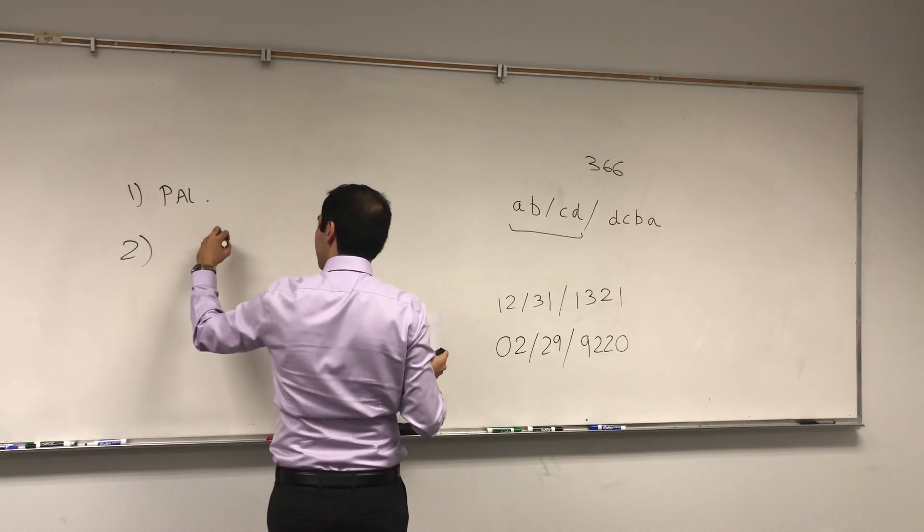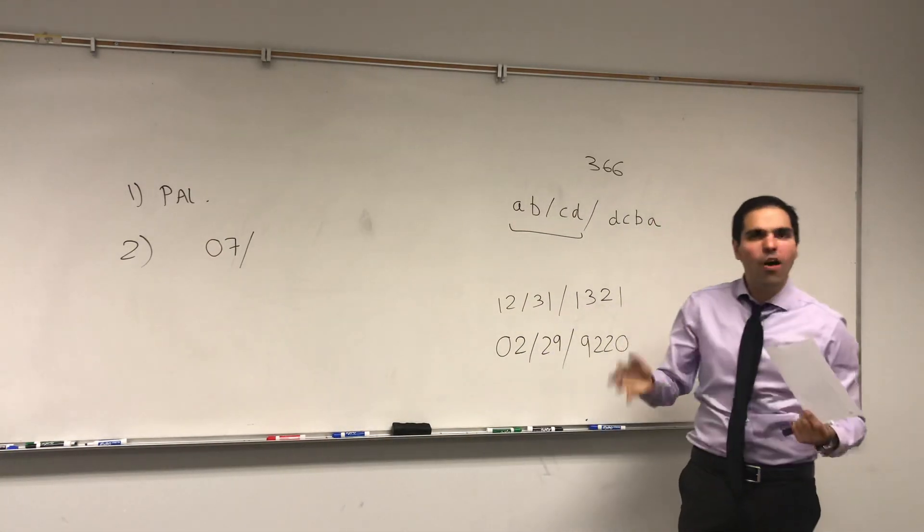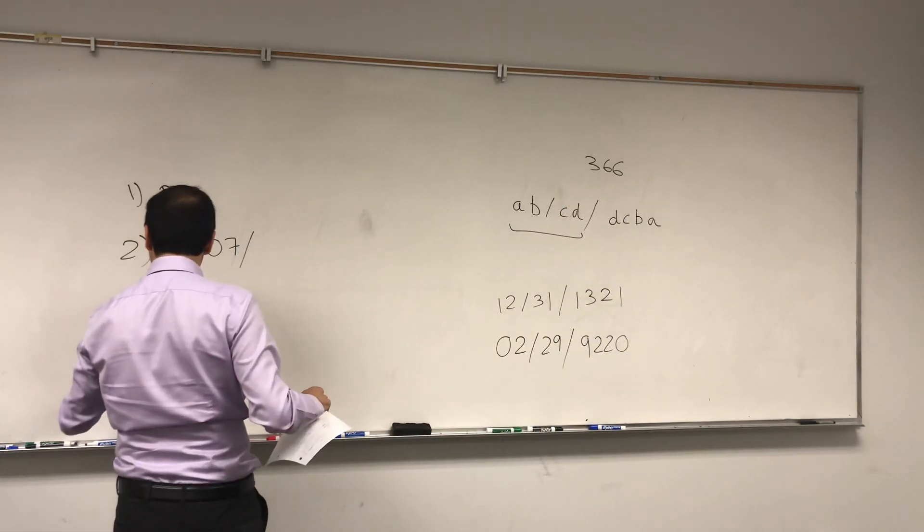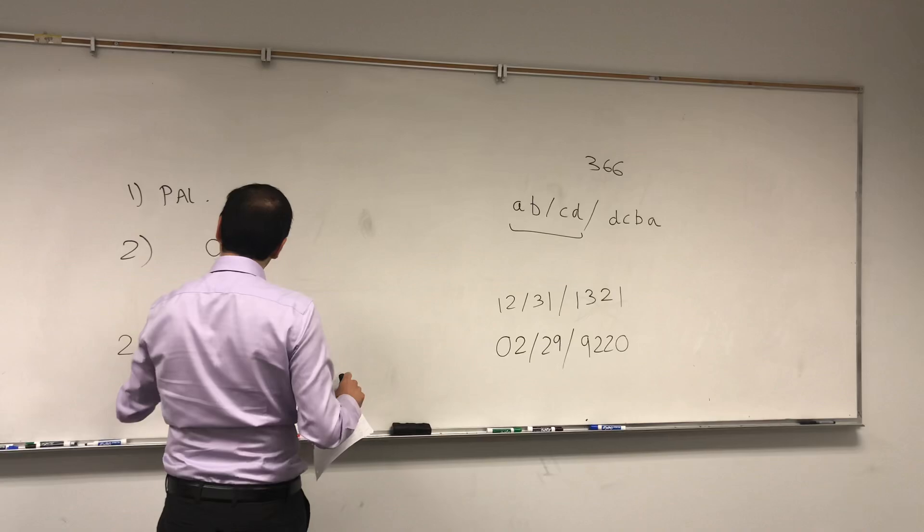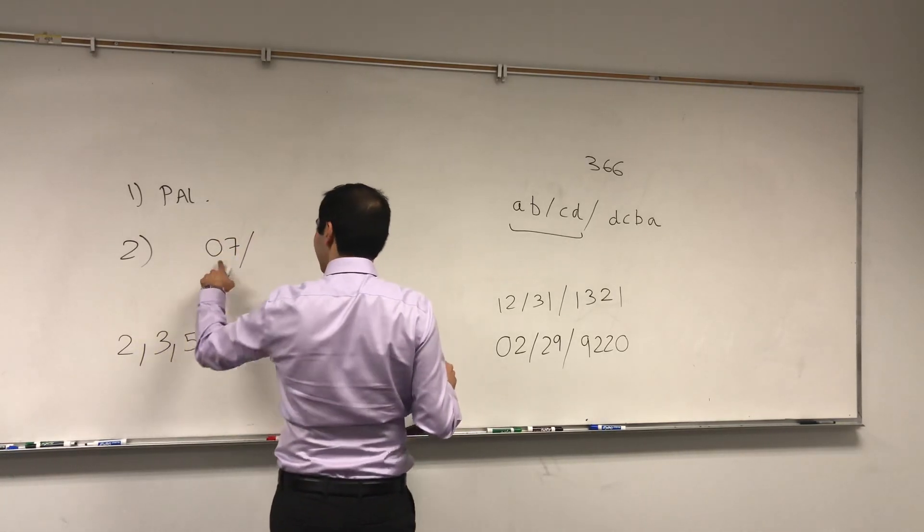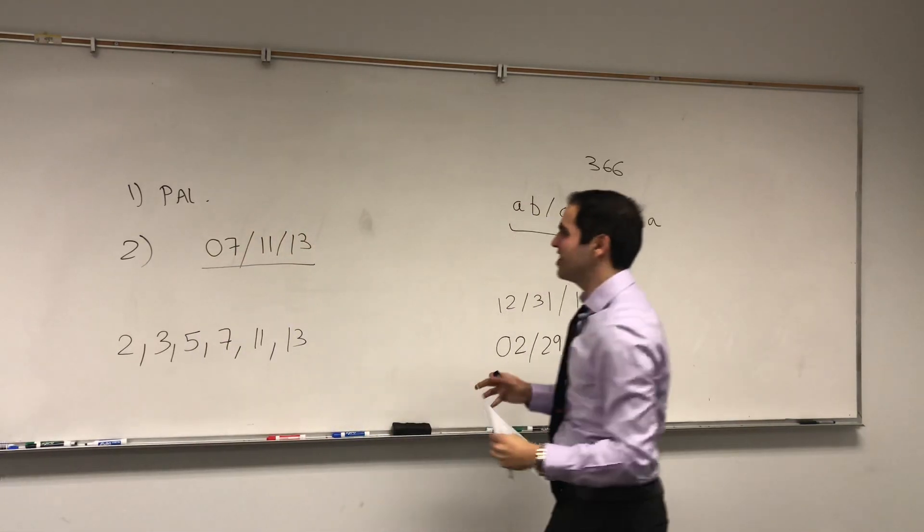So if you think prime numbers, they're numbers that are just divisible by one and themselves, other than one. So prime numbers would be 2, 3, 5, 7, 11, 13.